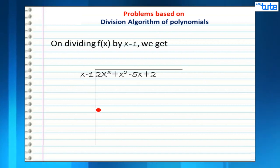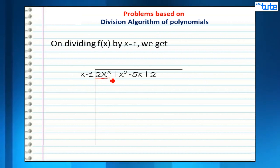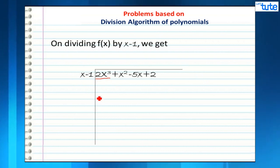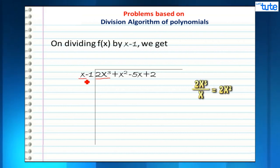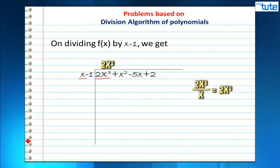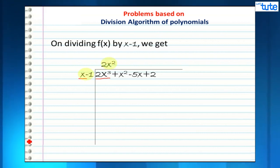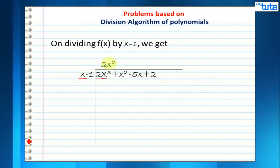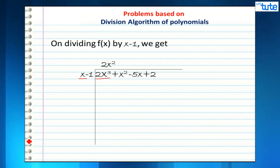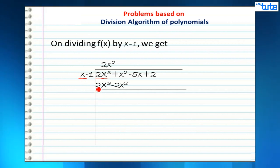When we do the long division method, we take into consideration the first terms of the polynomials. The first term of the dividend is 2x³ and the first term of the divisor is x. Dividing 2x³ by x, we get 2x², which becomes the first term of our quotient. Multiplying 2x² by the divisor, we get 2x³ - 2x².